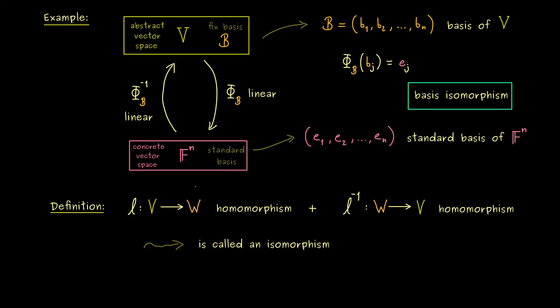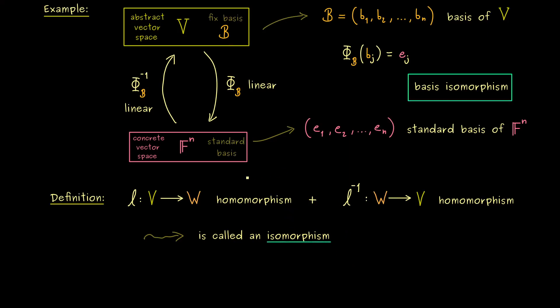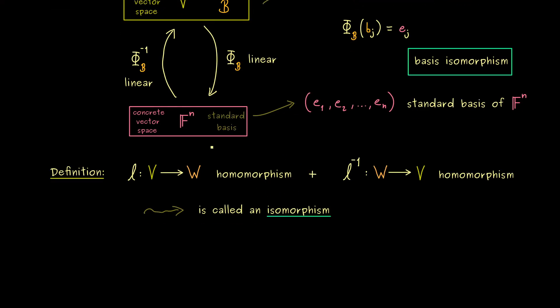So you see isomorphism is just a homomorphism where we can go in both directions. So in particular for our vector space structure we only need a linear map that is bijective.